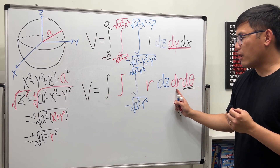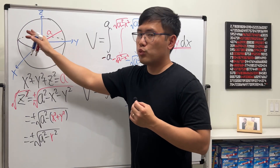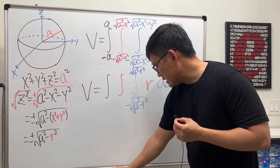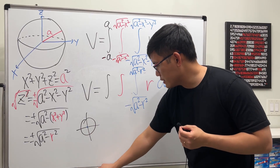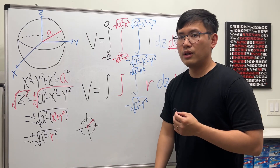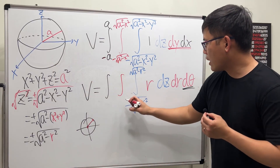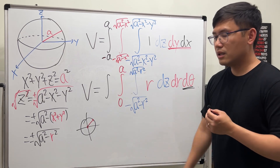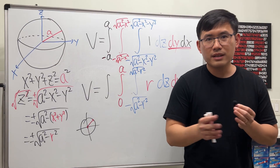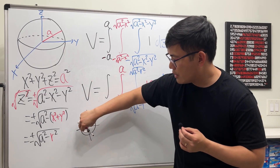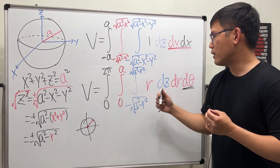Next, for r: r is how far you go out on the xy-plane, which is just a circle. r goes from 0 to a, since that's the radius of the circle at the base. Lastly, dθ is about the horizontal rotation — if you rotate 360 degrees, that's 0 to 2π for dθ.